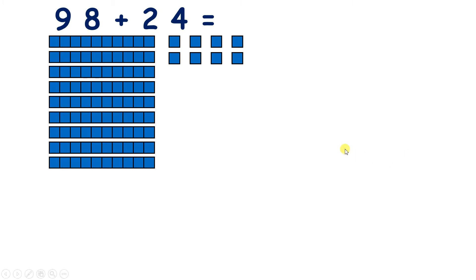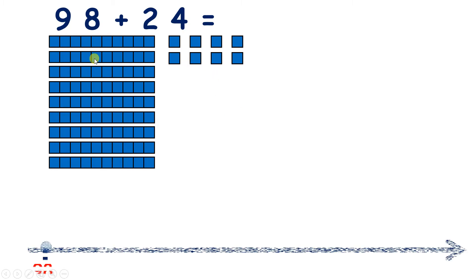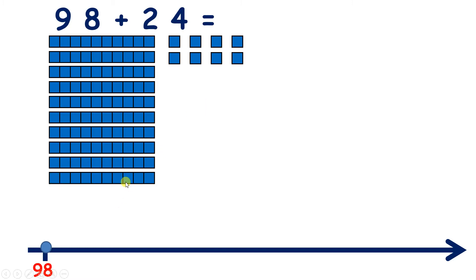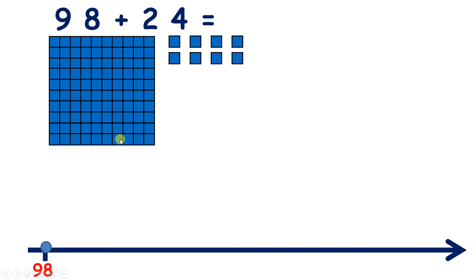Again, let's do the same question but this time with blocks, so we're clear about what we're doing. We have 98, so 9 tens and 8 units. Now if we add 10, we have 10 tens, and 10 tens is the same as 100. So if we push our tens together, we now have 100, 0 tens, and 8 units — so 108.